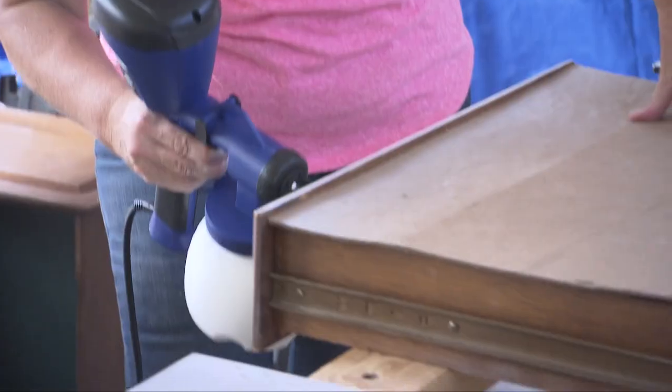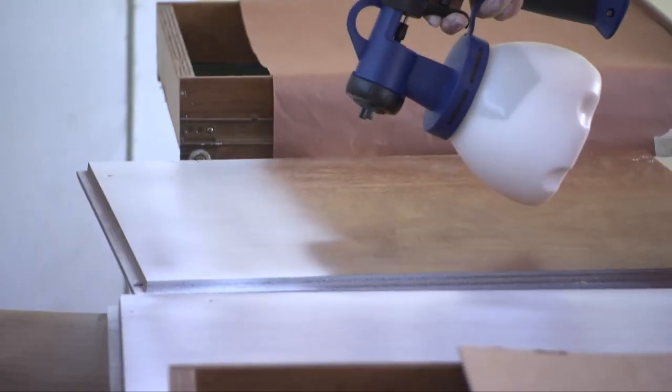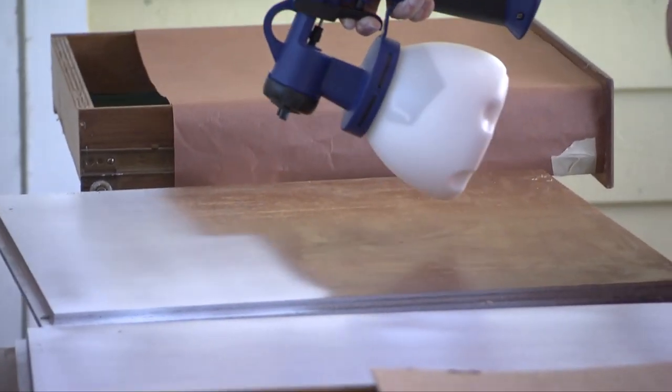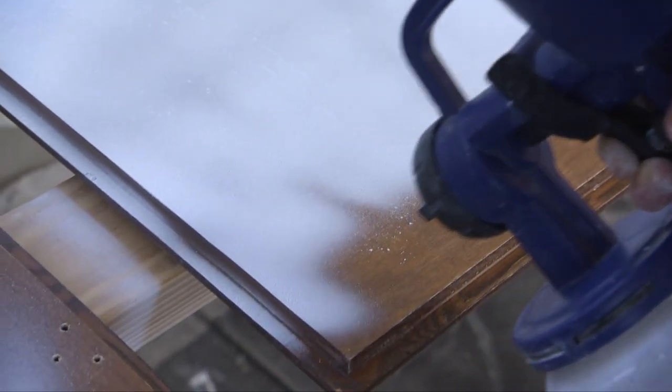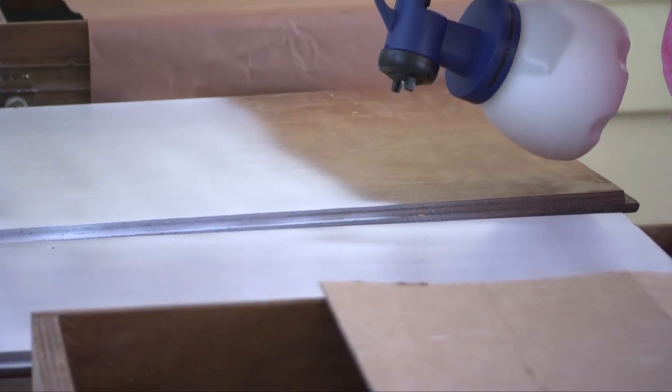When you spray paint, it's important to keep the spray tip a consistent distance from the surface and make slow passes back and forth. Each pass should begin and end beyond the edge of the door so there's no build-up of paint on the edges.